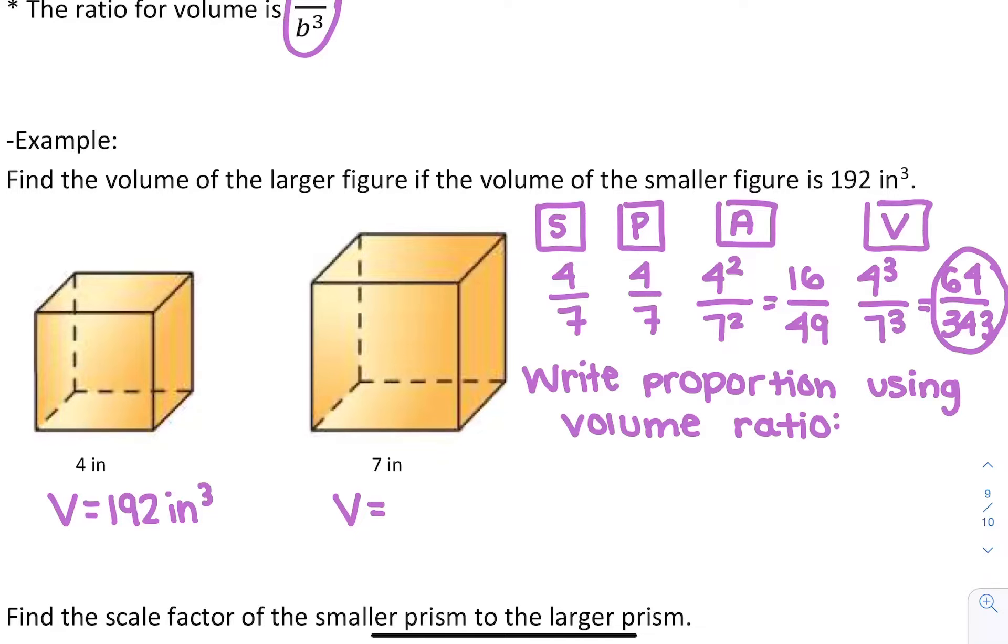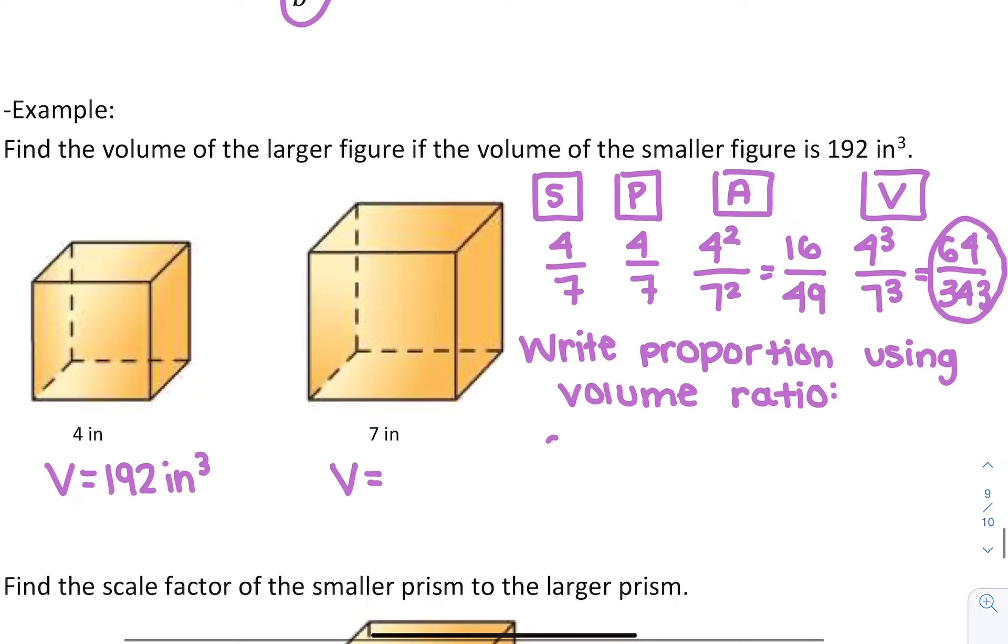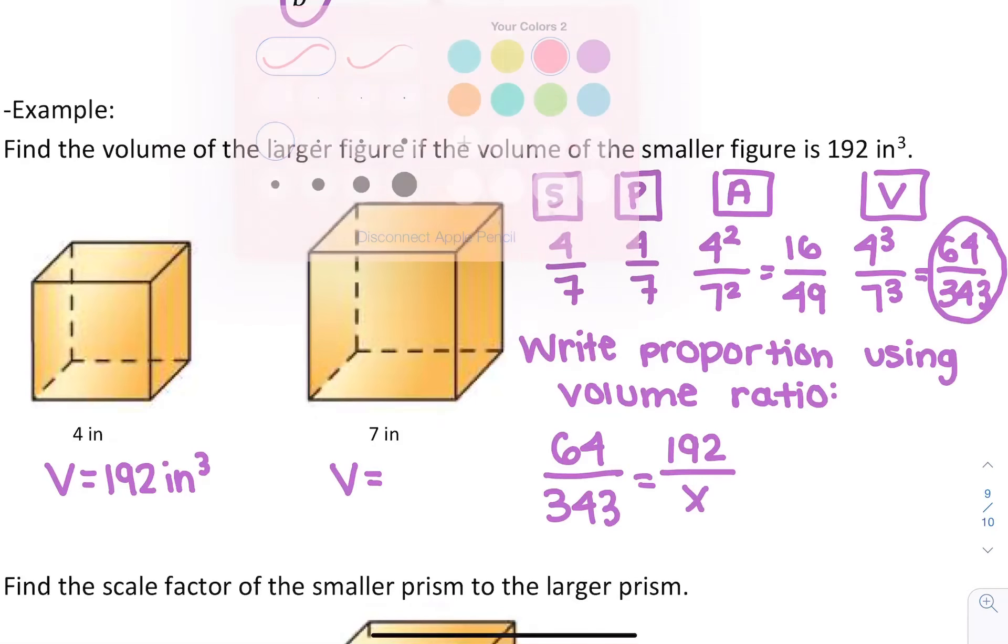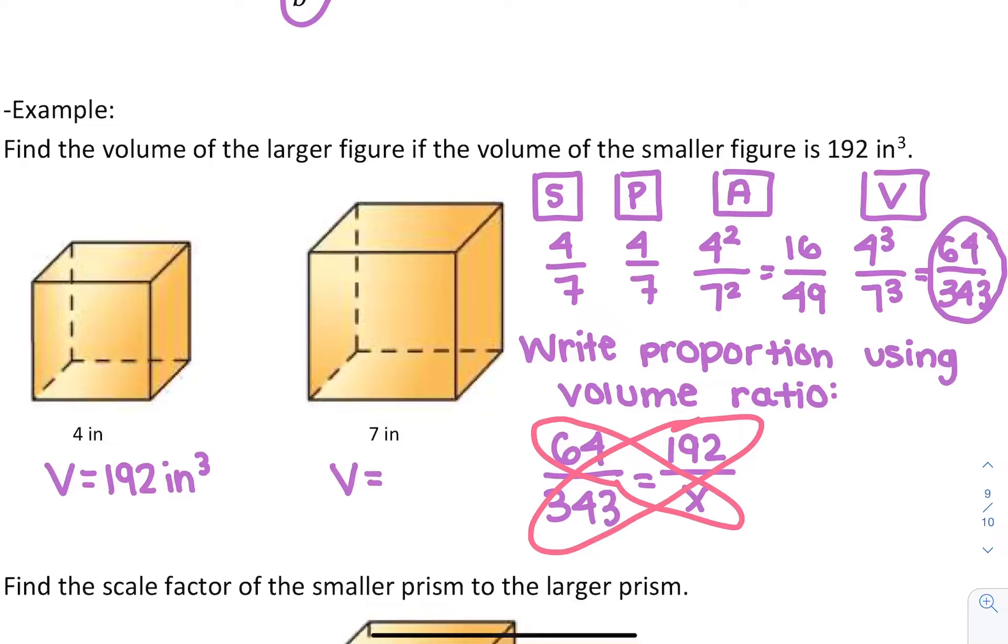The ratio of the volume we just figured out was 64 over 343, and that's going to be equal to the actual ratio of the volumes. So 192 over whatever the ratio of the larger one is. To figure this out, we have to cross multiply. So we do 64 x equals 343 times 192, which happens to be 65,856.